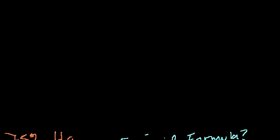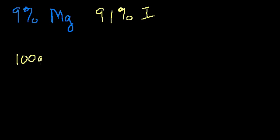Let's do another one of these. Let's say you have another bag that is 9% magnesium and the remainder of the bag, 91%, is iodine. So the way to do all of these is just to do the same thing. Assume you have 100 grams. So if you have 100 grams, you have 9 grams of magnesium and you have 91 grams of iodine.